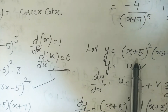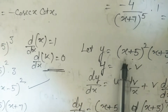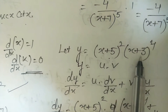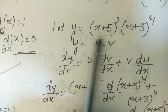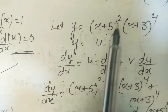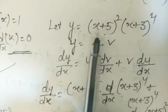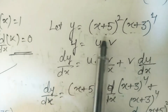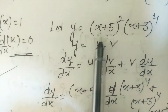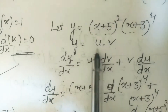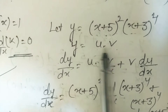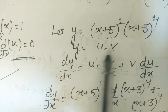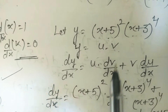For (x+5)²·(x+3)^4, expanding would be very long, so we use the product rule (u·v rule) since both are functions of x.